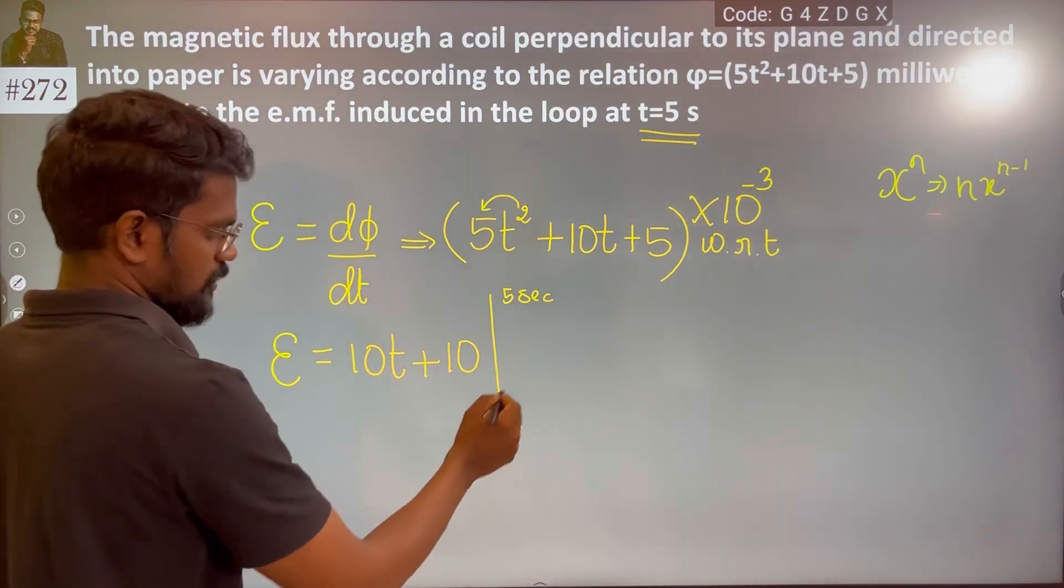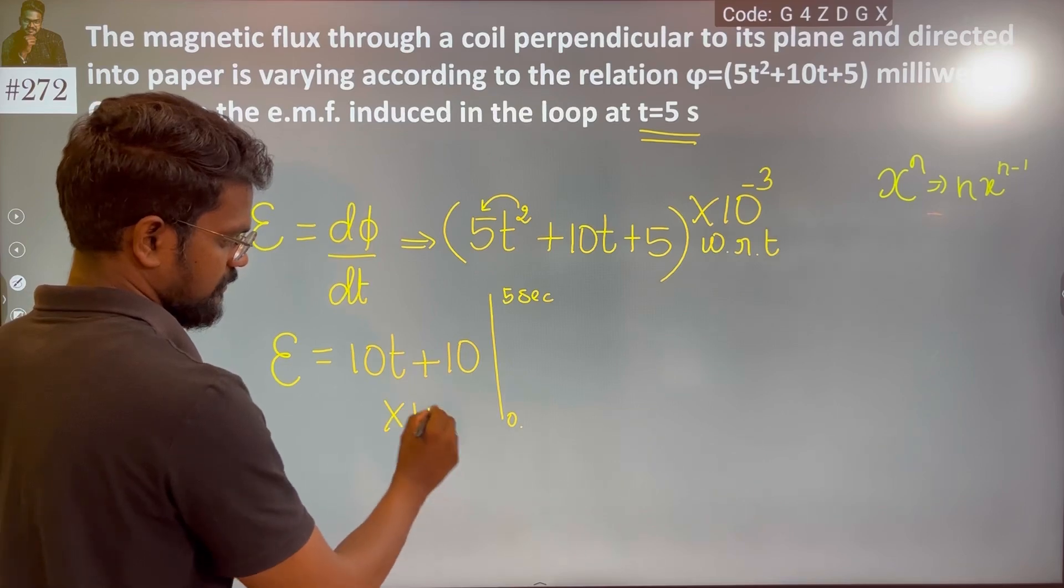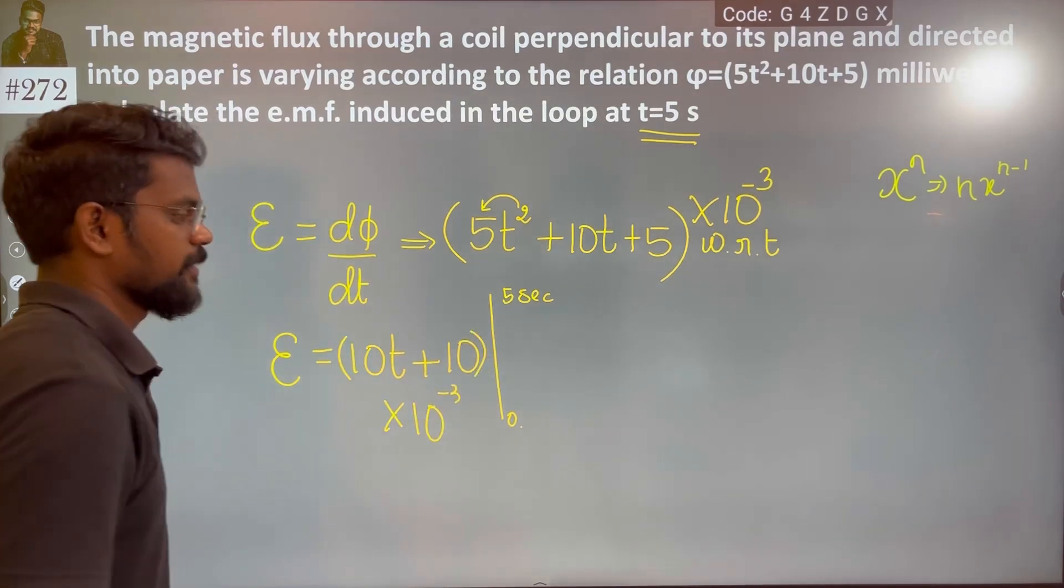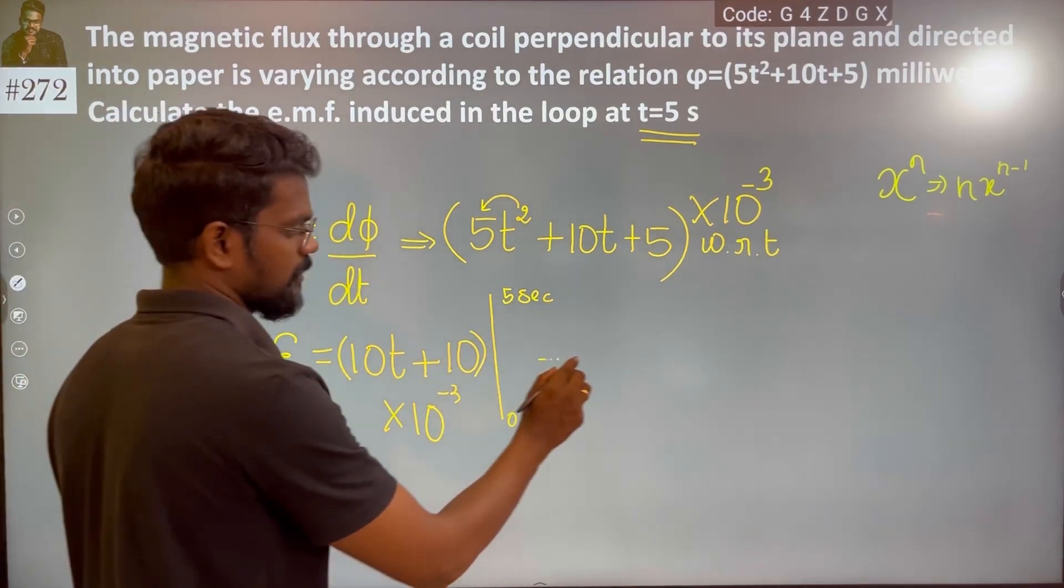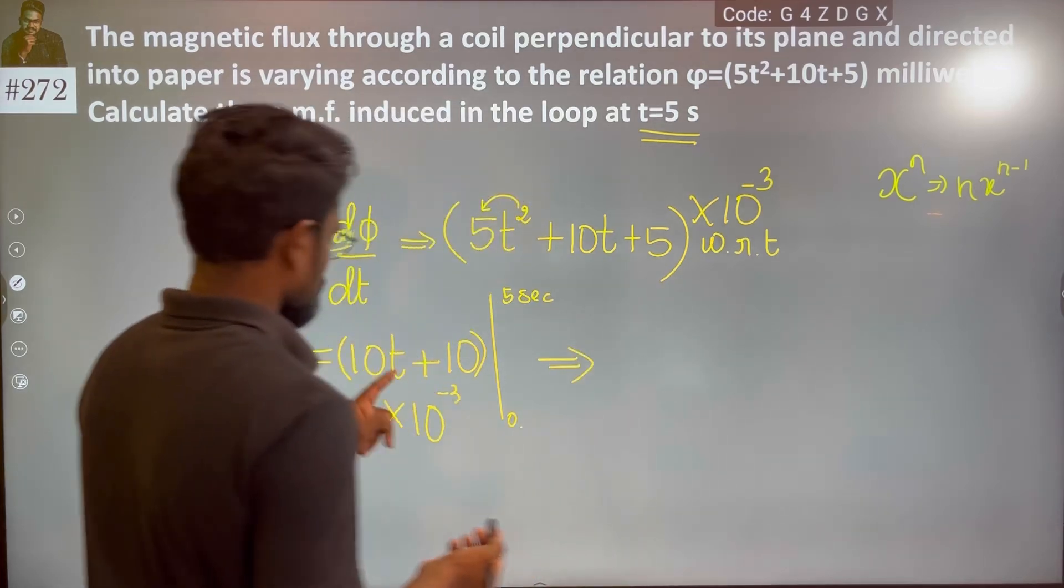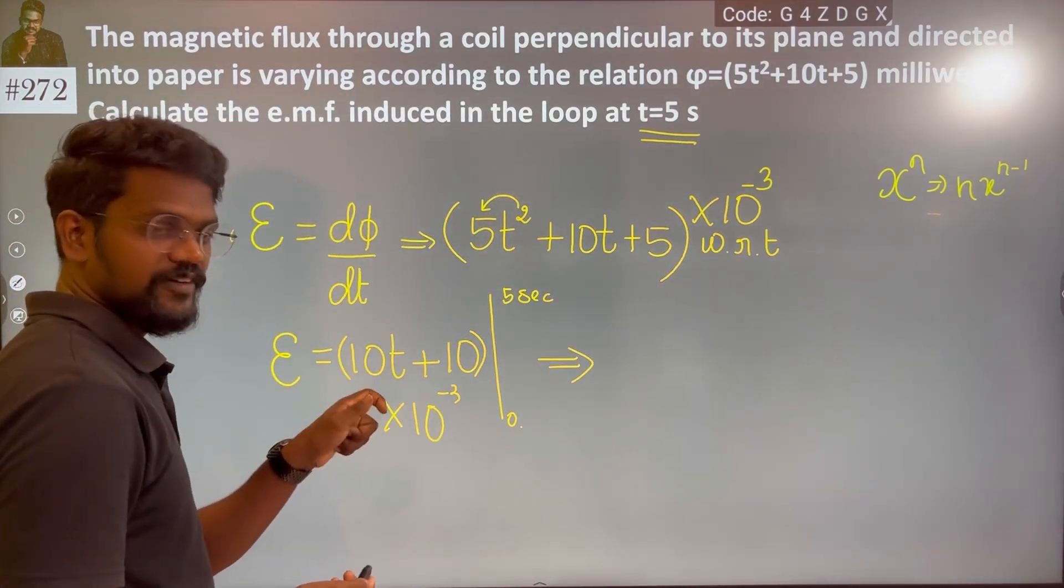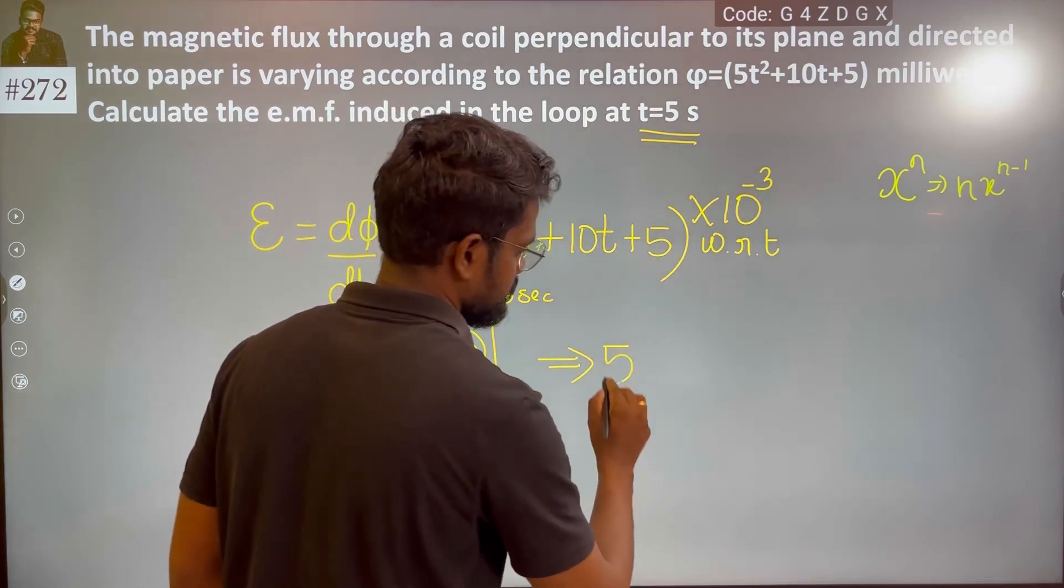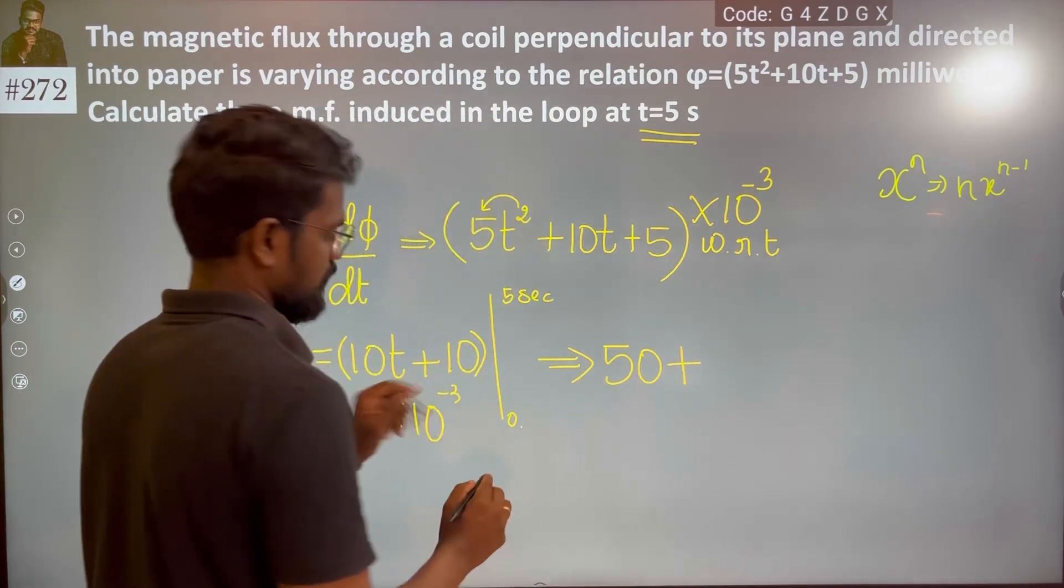So this is 10 to the power minus 3, okay. Now we have 5 seconds time to substitute. 10t, t is 5, 10 into 5 becomes 50, plus 10.